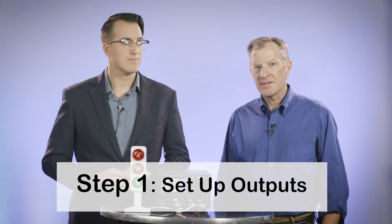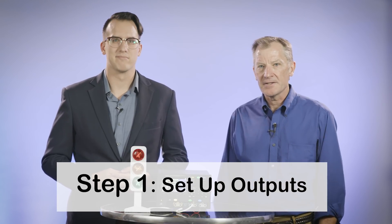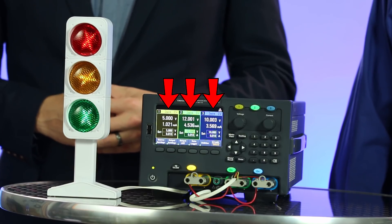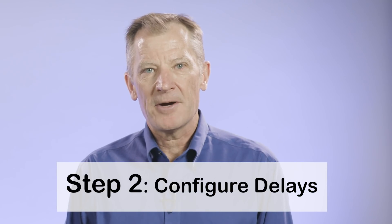The first step is to set up each of the outputs for the correct voltage and current limits. The power supply has three outputs, all are independent and isolated, so it's easy to set up the voltages and not have to worry about a common ground. Once we've done that, it's time to set up our delays.